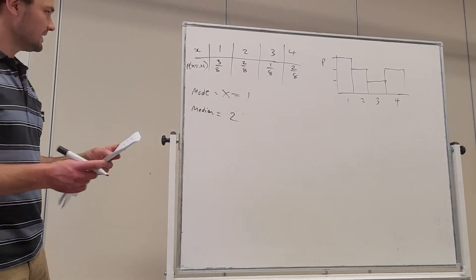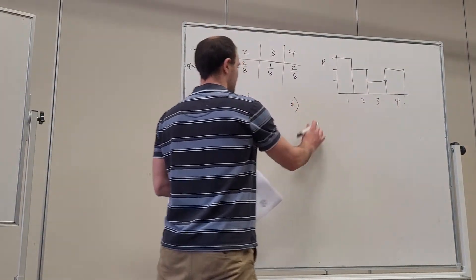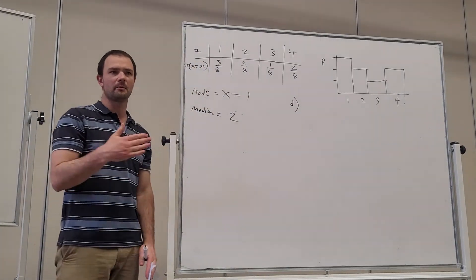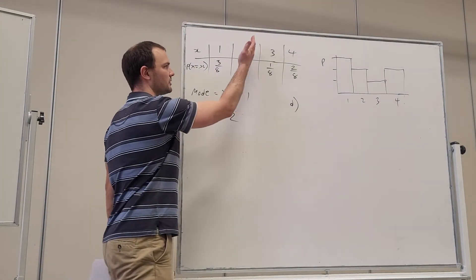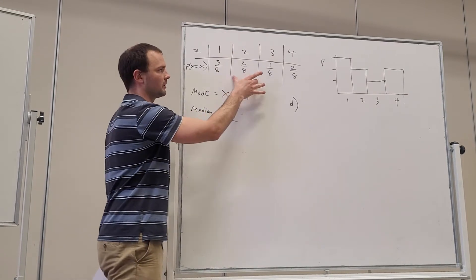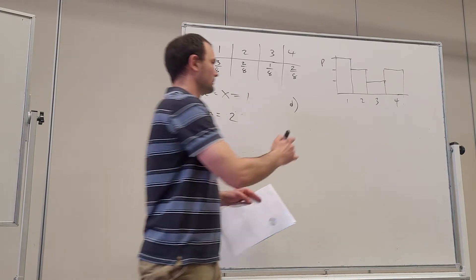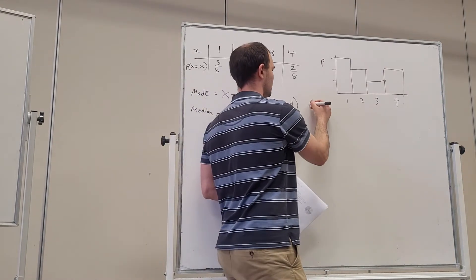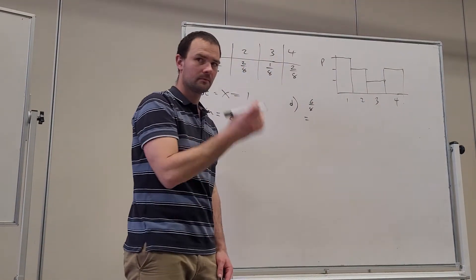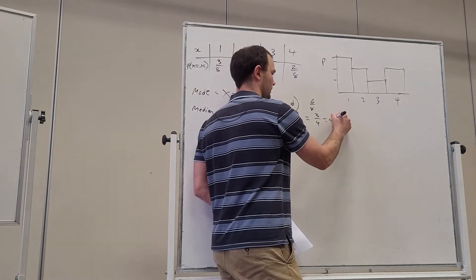Part D: find the probability of X being less than or equal to three. That means the probability of getting event three, event two, or event one — just the sum of those probabilities, so that's going to be 6/8. And because it's a final answer, we can simplify it to 3/4, or 0.75.